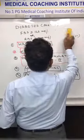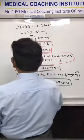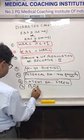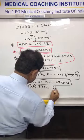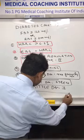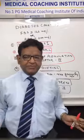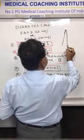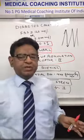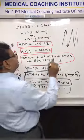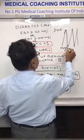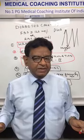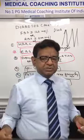Then we have brittle diabetes, which is seen in type 1 diabetes. In these patients, sometimes sugar goes very high and sometimes very low — there is wide fluctuation of blood sugar. Sometimes the patient develops diabetic ketoacidosis, sometimes hypoglycemia. This wide fluctuation of blood sugar is brittle diabetes, seen especially in type 1 patients and particularly in children.